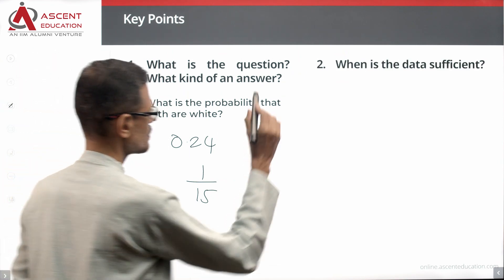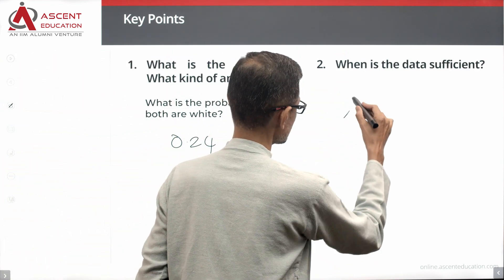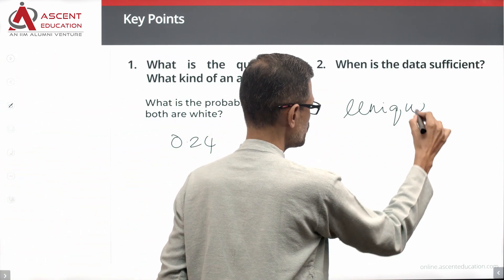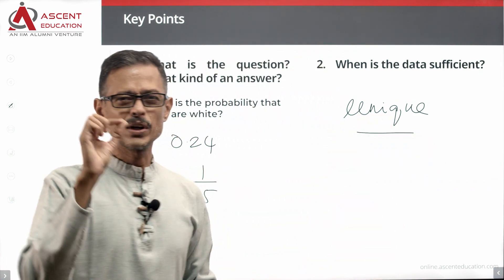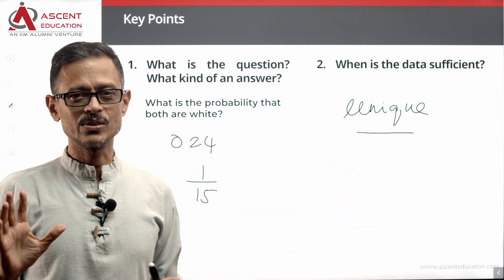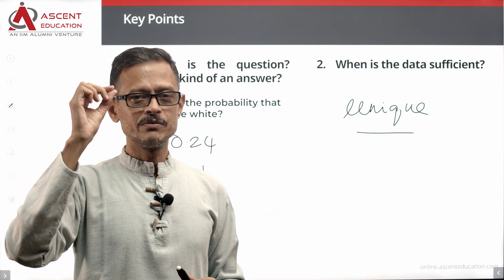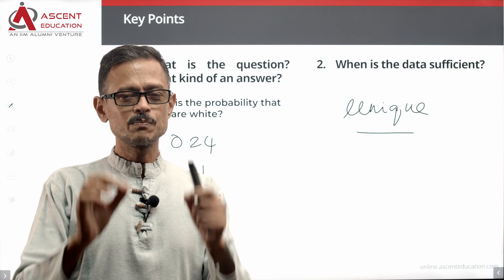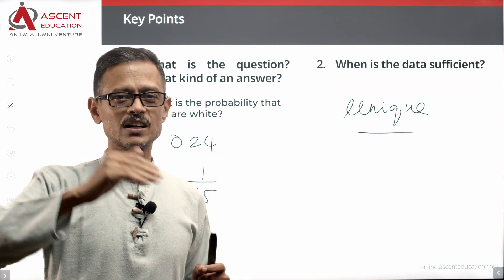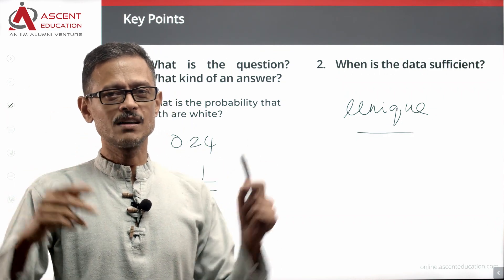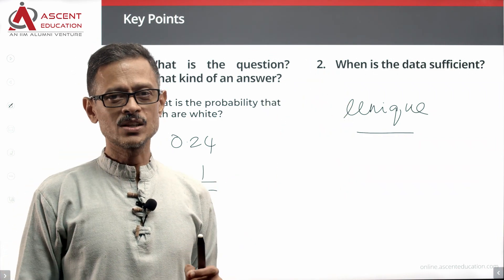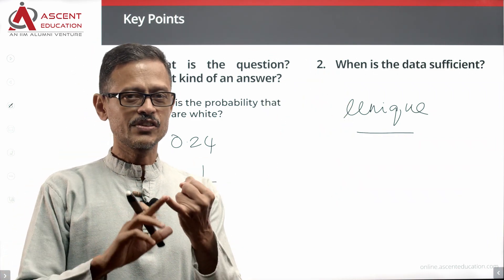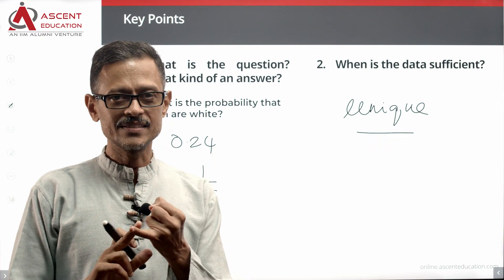When is the data sufficient? The data is sufficient when you have a unique answer. If the probability gives more than one answer — say 0.24 or 0.27 or 0.93 — then the data is not sufficient. Data is sufficient only when you have a unique answer.